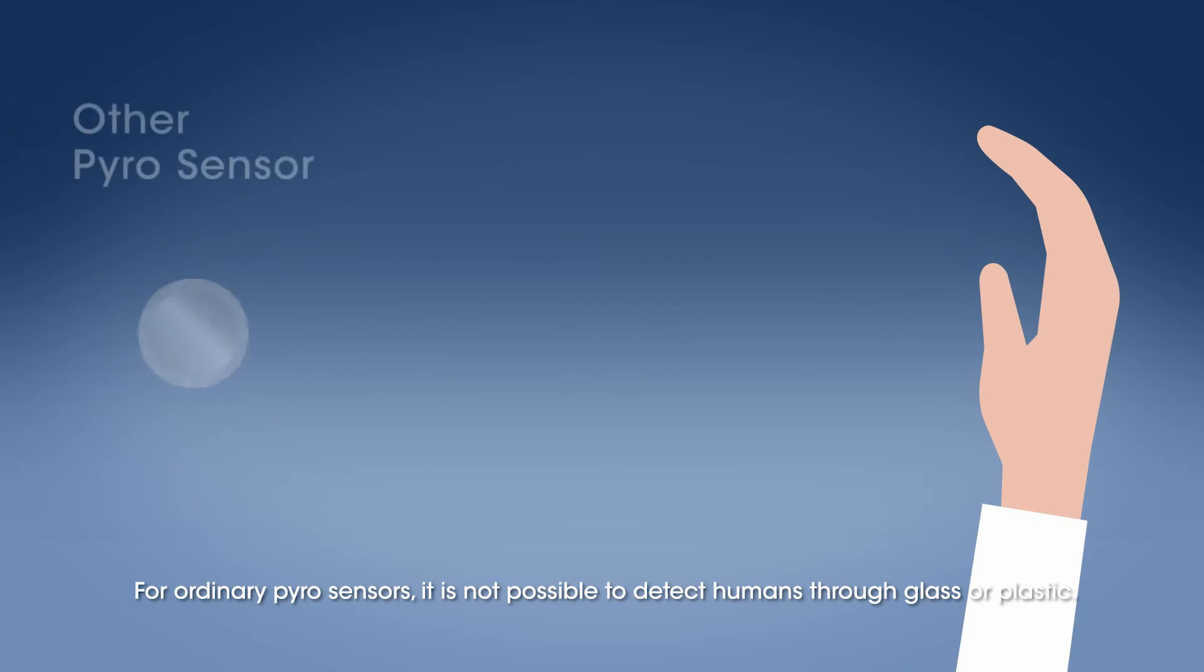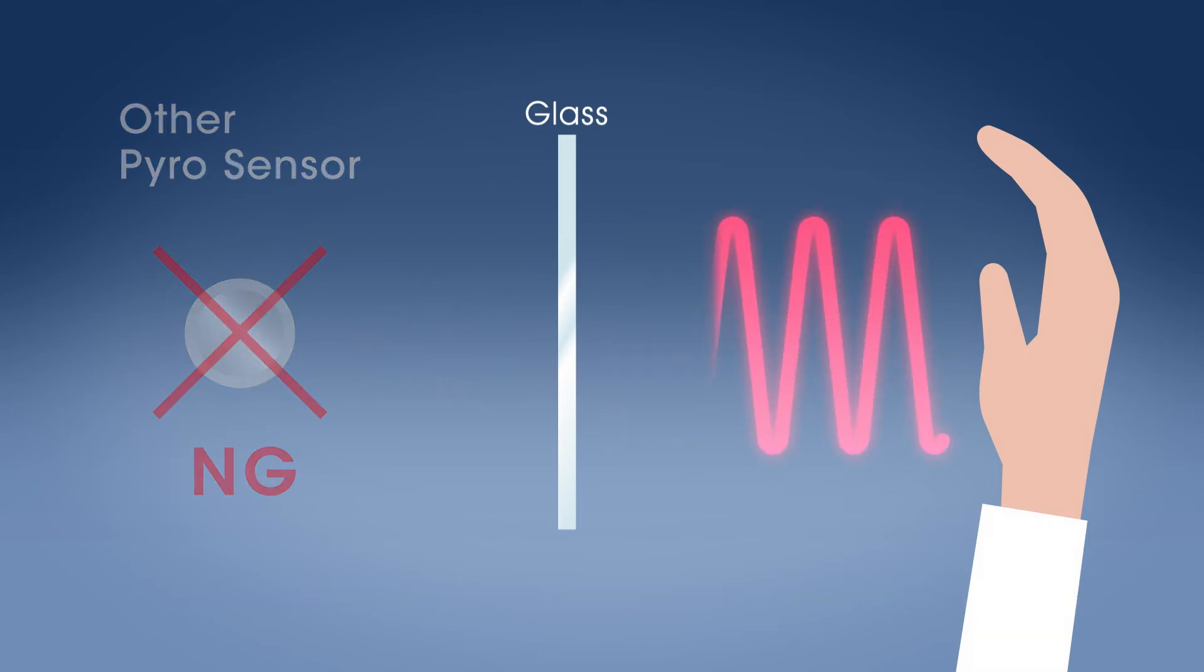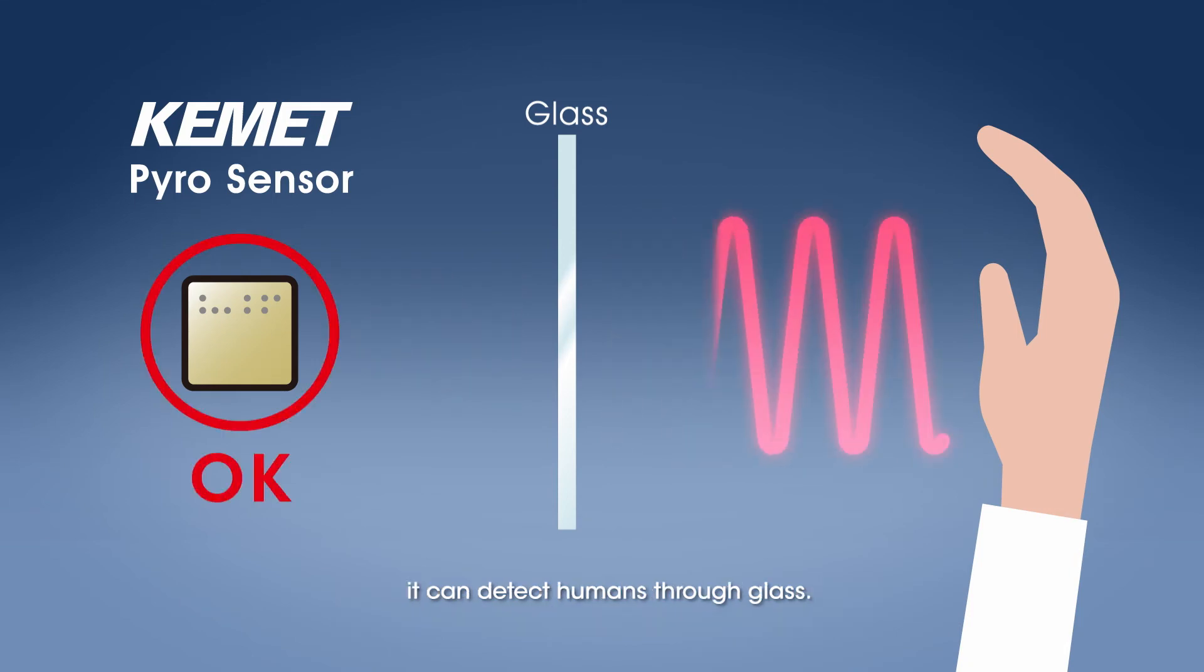For ordinary Pyro Sensors, it is not possible to detect humans through glass or plastic. With our proprietary piezoelectric ceramic material and element structure of KEMET's Pyro Sensor, it can detect humans through glass. This gives even more freedom in the design of the outer appearance of the device.